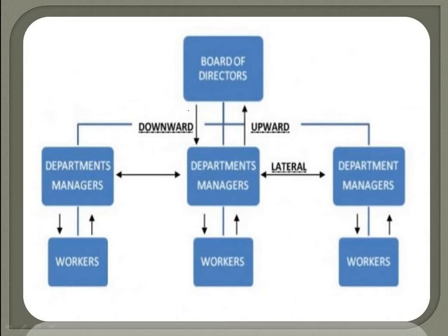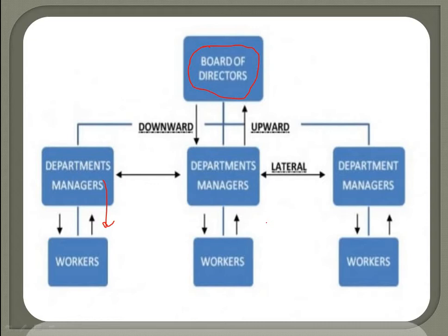This picture describes how information or communication flows. In a company, if we consider the highest hierarchy as the board of directors, when they pass on information to their subordinates, that is downward communication. They communicate to different departmental managers, who further disseminate information to the workers. The reverse — when workers communicate to the highest management — is upward communication, and lateral communication is between different departments.